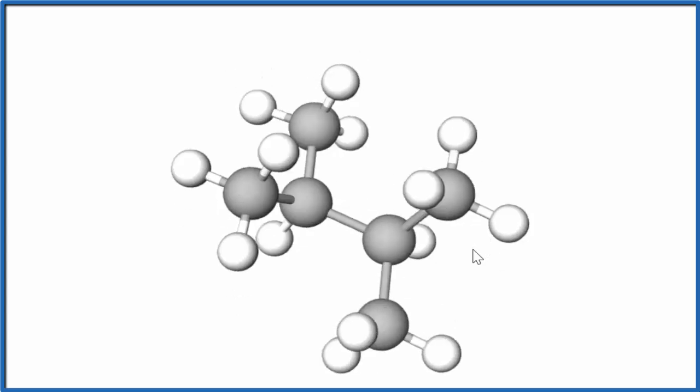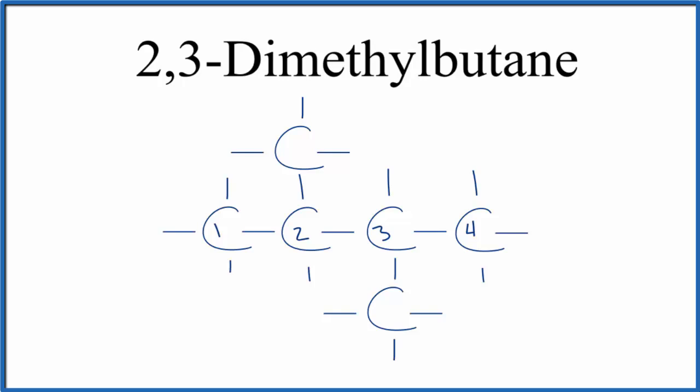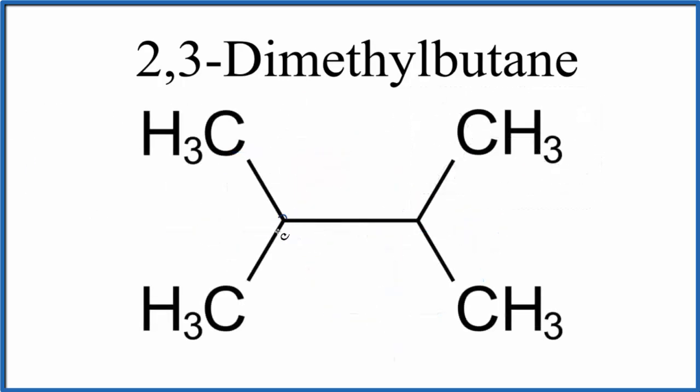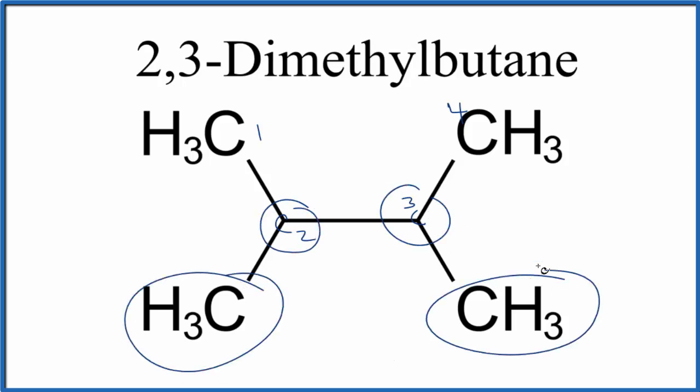Let's go back. Sometimes you'll see the structure written like this, where we have carbons here and here, and again, you have 1, 2, 3, 4, and on the second and third we have our methyl groups. This is Dr. B with the structure for 2,3-dimethylbutane. Thanks for watching.